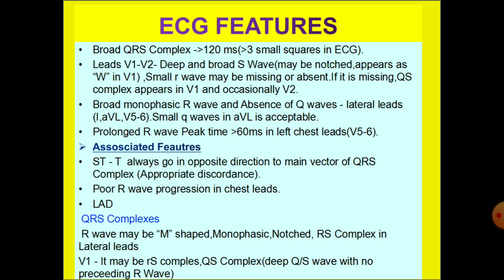In left chest leads, V5 and V6, we can see prolonged R wave peak time, that is more than 60ms. R wave peak time is measured from the beginning of the QRS complex to the peak of the R wave.